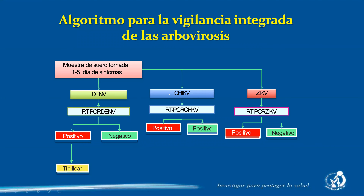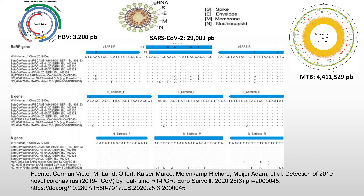¿Puede haber dos infecciones juntas? Sí, como ha habido dengue con SARS-CoV-2. La limitación actual es que necesitamos apoyo para tener los tres kits de diagnóstico. Recientemente se terminó el kit para serotipificación de dengue. Si no tenemos kits de chikungunya y Zika, tenemos muestras acumuladas sin procesar. Debemos adquirir los kits para hacer esa vigilancia sindrómica, porque tenemos el kit molecular para dengue pero no para Zika y chikungunya, ni para leptospira.